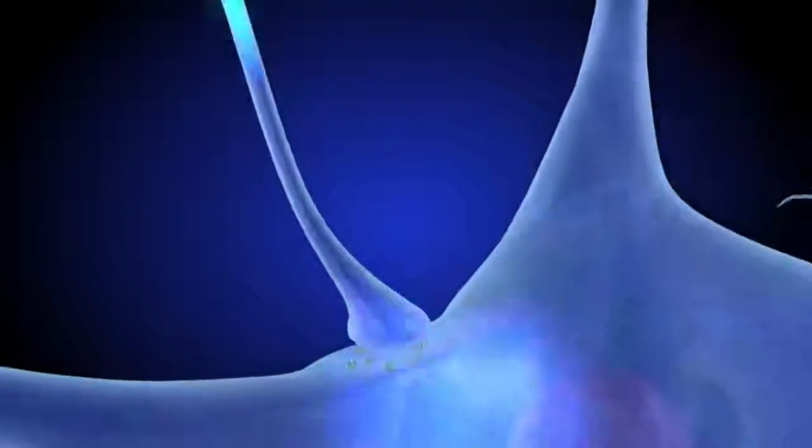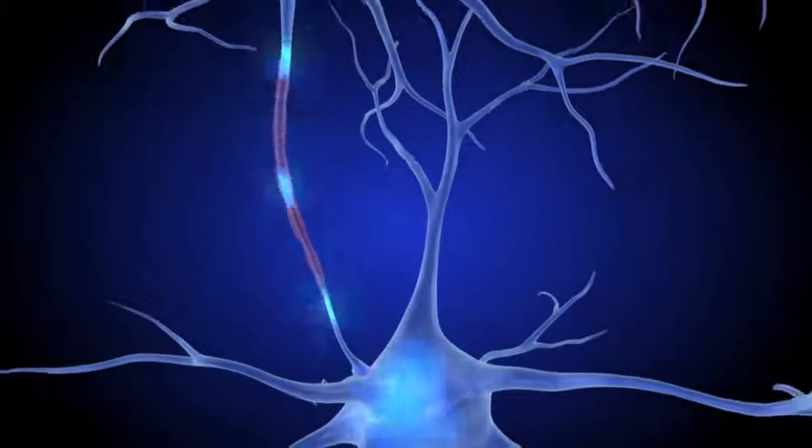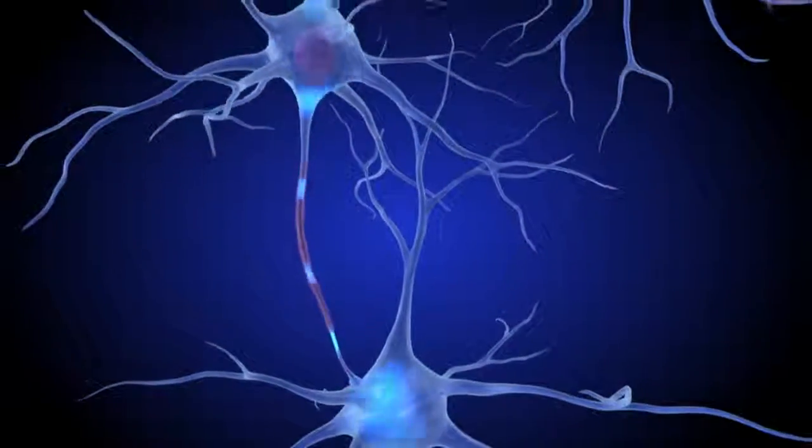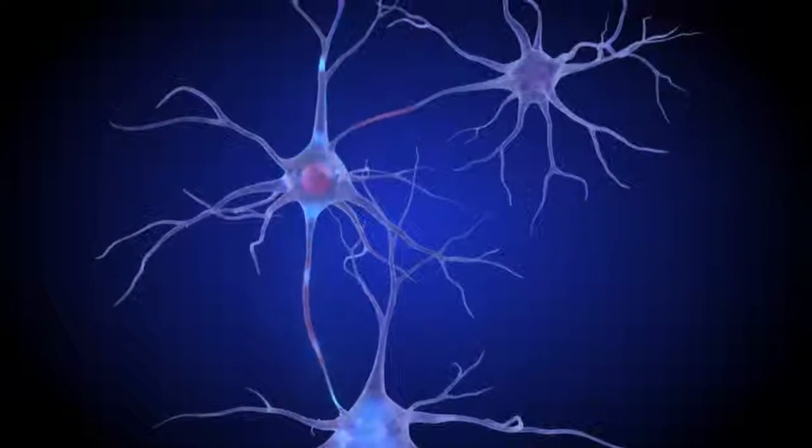Dopamine transporters in the presynaptic neuron are not the only things that control how much dopamine is released or how often. Other nearby neurons also play important roles in regulating neural signals.